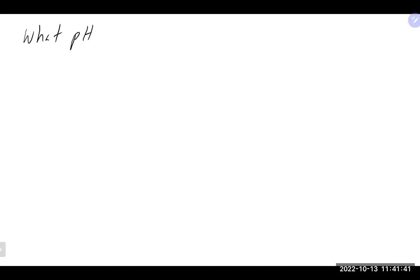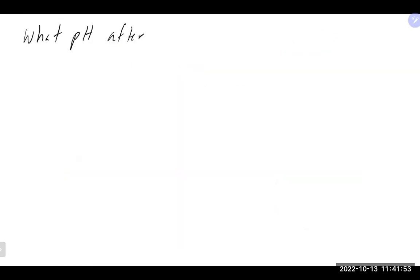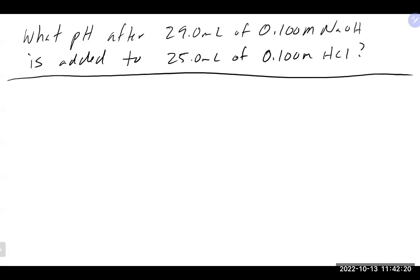Let's try one here. What is the pH after 29 milliliters of 0.1 molar sodium hydroxide is added to 25 milliliters of 0.1 molar hydrochloric acid? Take a moment to calculate that. In this titration, we are adding the base to the acid.